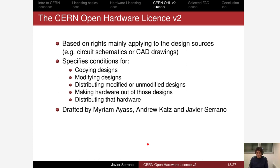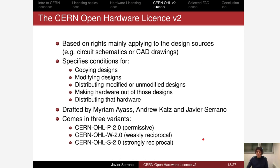The license was drafted by Miriam Ayaz, a legal advisor in the CERN Knowledge Transfer group; Andrew Katz, an independent consultant who did a lot of work on version two; and myself. Recognizing that there are three big families of sharing practices in the hardware world as well, we split version two into three variants: the permissive variant, the weakly reciprocal variant, and the strongly reciprocal variant — which have very similar effects to what I described for the case of software.